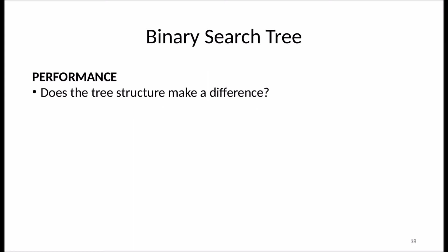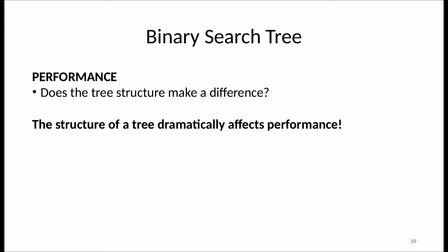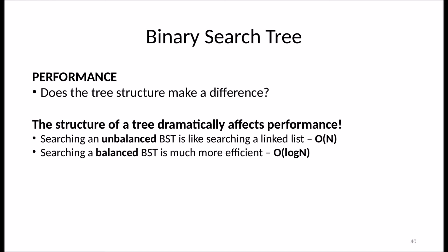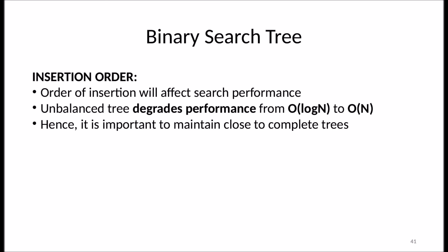What about performance? The structure of the tree dramatically affects it. If we have an unbalanced tree that looks like a linked list, performance is O(n) — we have to check every node. On the other hand, a perfectly balanced binary search tree gives O(log n), because at each step we cut the search space in half. So insertion order has a real impact: if it results in an unbalanced tree, performance degrades from O(log n) to O(n).